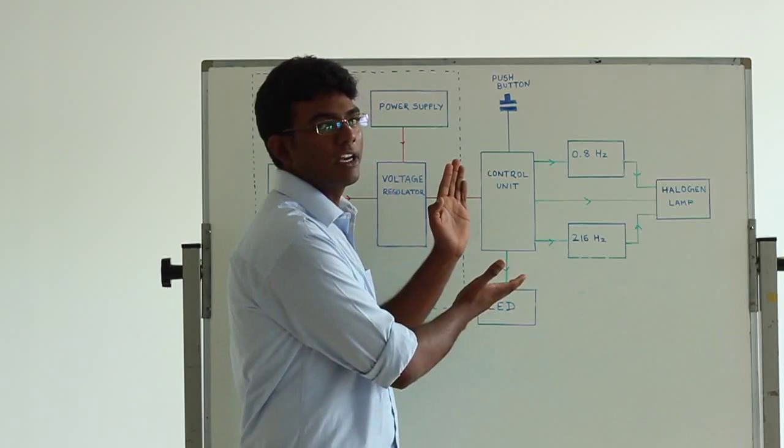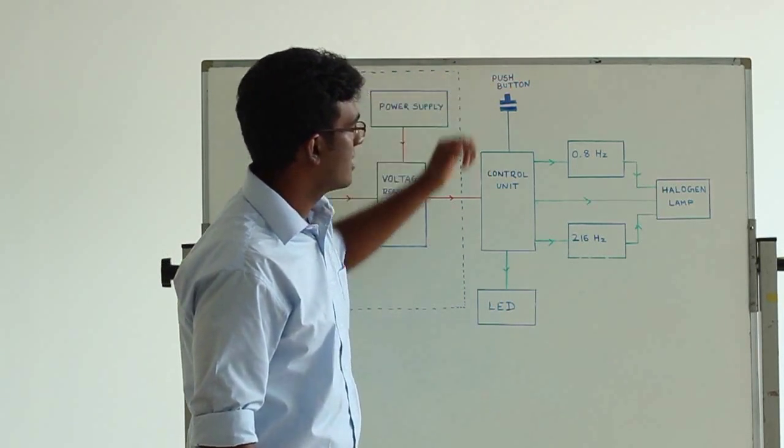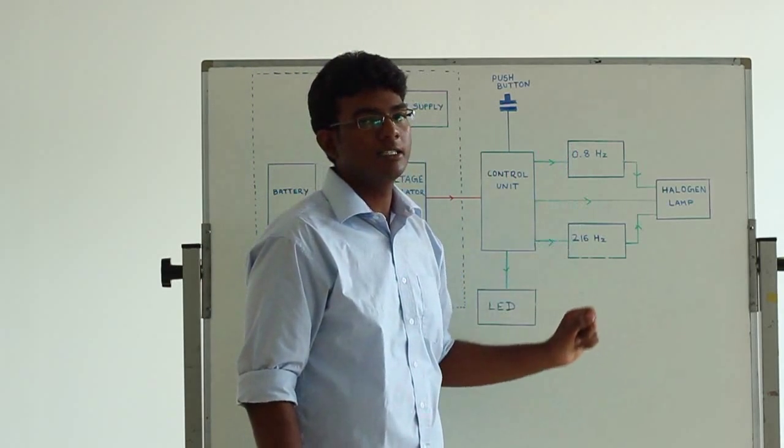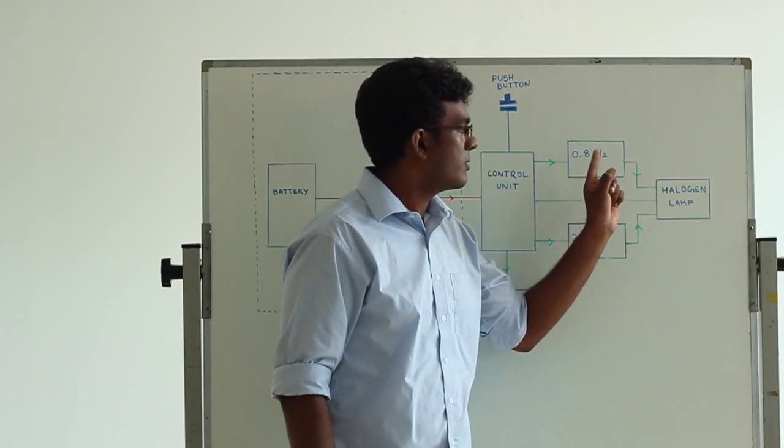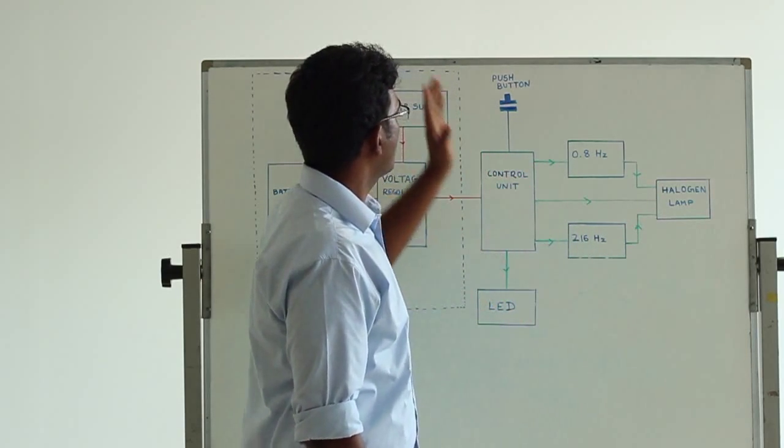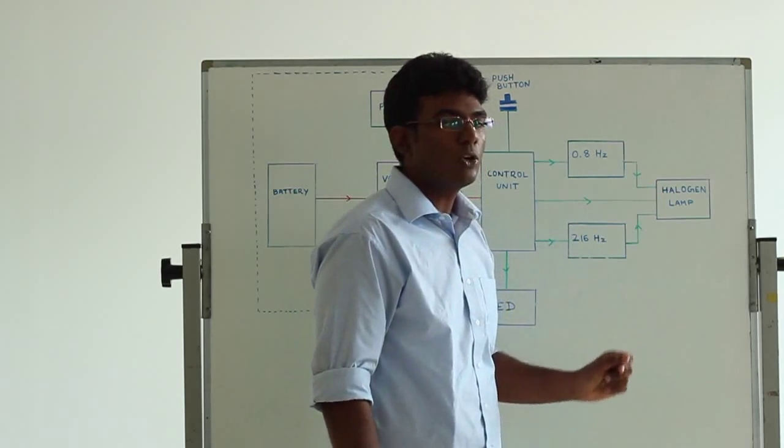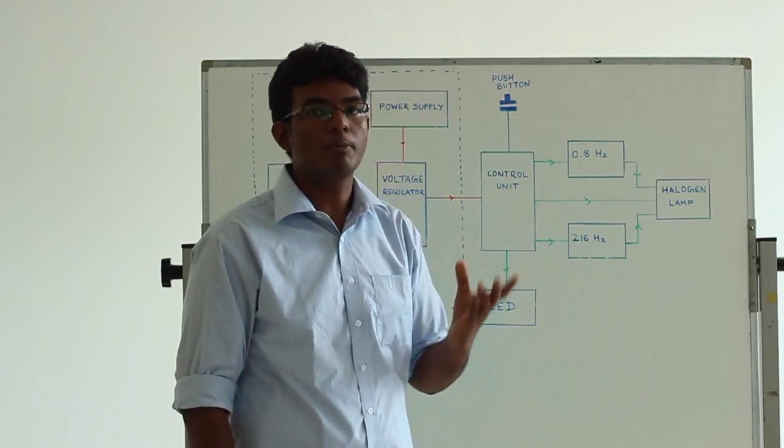This control unit is controlled by this push button. When you press it once, it will connect to this 0.8 hertz oscillator, so the halogen lamp will blink. Then when you press it again, it will directly connect to this halogen lamp, so the halogen lamp will have its maximum brightness.